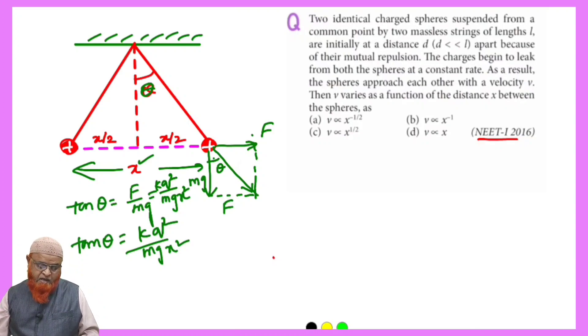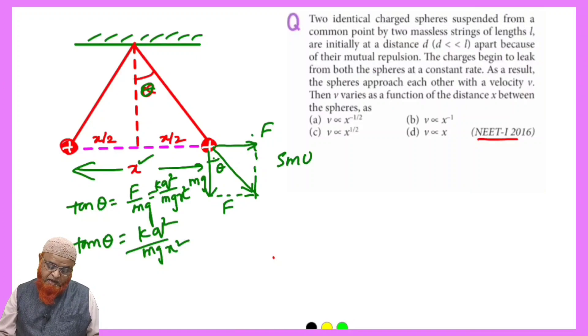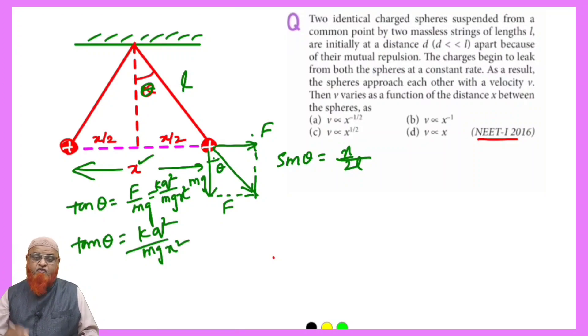Similarly here, if you consider this as sin theta, you will get sin theta is equal to x by 2 (opposite side) and the length of the pendulum is taken as l, so x by 2l is going to be sin theta.